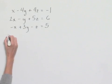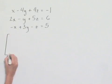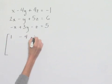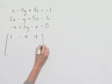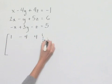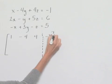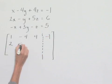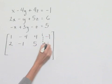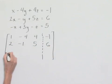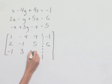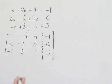We're going to set up the augmented matrix with our coefficients. The first row is 1, negative 4, 4, separated from the result of negative 1. Our second row will be 2, negative 1, 5, and 6. Our third row will be negative 1, 3, negative 1, and 5.